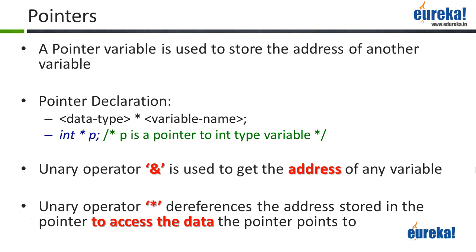An integer variable is used to store integer numbers. A floating point variable is used to hold a floating point number. Similarly, a pointer variable is used to hold an address. So a pointer variable is similar to any other variable, but the difference is that in a pointer variable you're going to store the address of some other variable or a particular memory location.